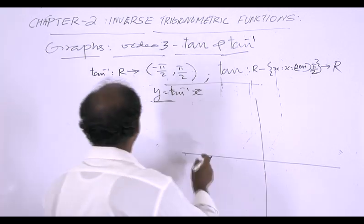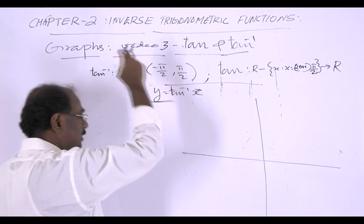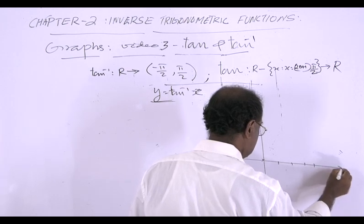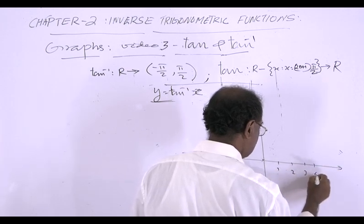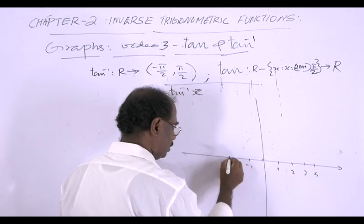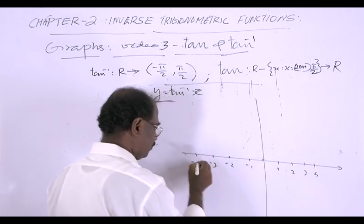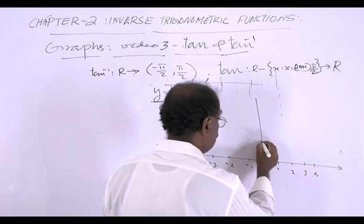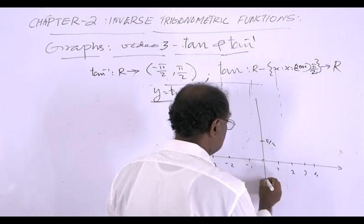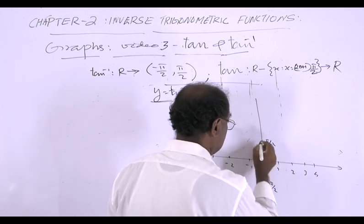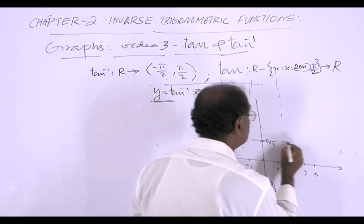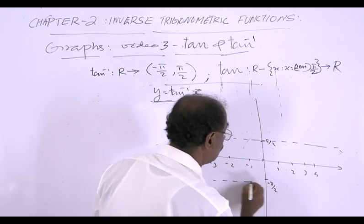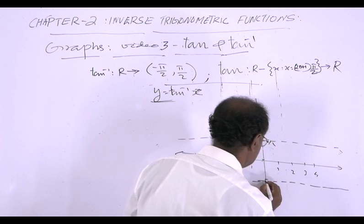For the tan inverse graph, the horizontal axis represents ℝ with values 1, 2, 3, 4, ... to infinity and −1, −2, −3, −4, ... to minus infinity. The vertical axis marks −π/2 and +π/2, and both these points are excluded — they are asymptotes, not attained values.